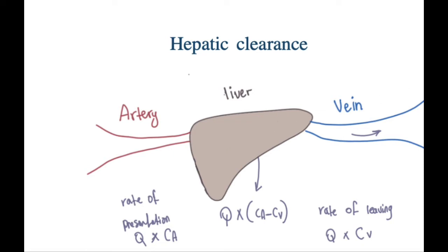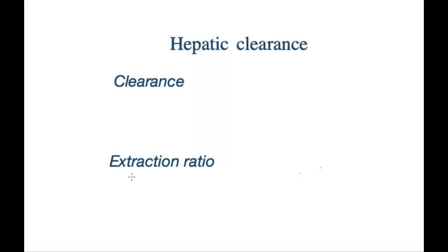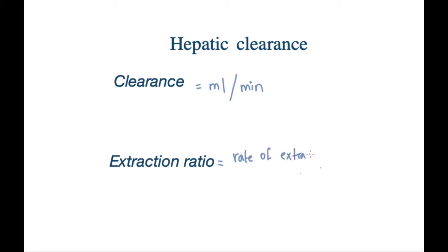This is a general overview on hepatic clearance, but now let's understand in depth what hepatic clearance is and other terms we need to study these processes. Clearance refers to the volume of blood that passes through an organ and gets cleared of drug per unit of time — it is the volume of blood cleared, in ml, per unit of time per minute. The extraction ratio refers to the rate of extraction over the rate of presentation.